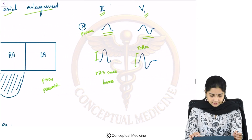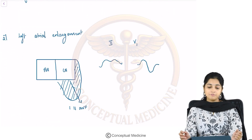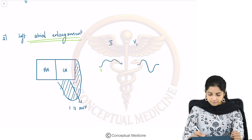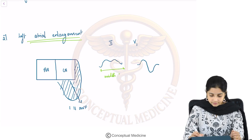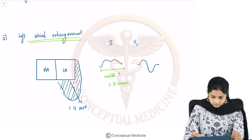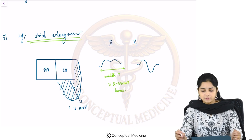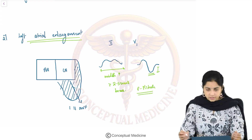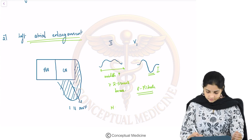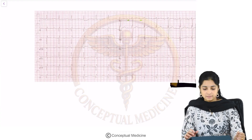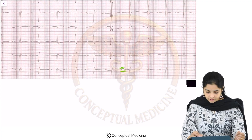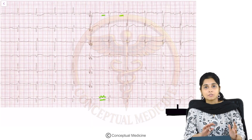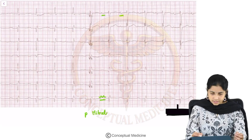Now let us look at the second abnormality — left atrial enlargement. When there is a left atrial enlargement, the P wave width increases to more than 2.5 small boxes, or the second portion is more deep. This is what we call P mitral, seen in mitral stenosis. Looking at this ECG, you can see a wide P wave with a hump-like appearance, and in lead V1 the second portion of the P wave is much deeper.